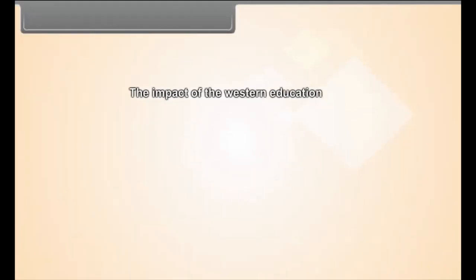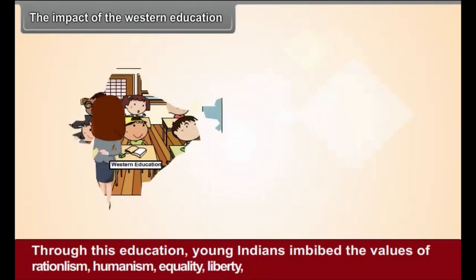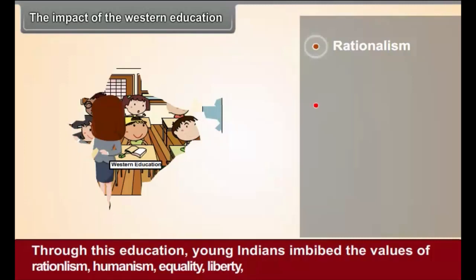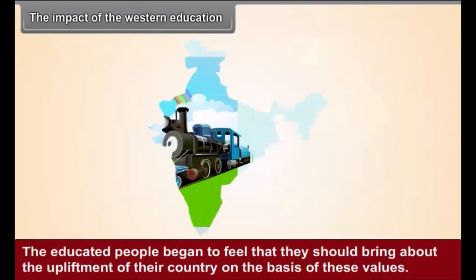The Impact of Western Education: The British introduced Western education in India. Through this education, young Indians imbibed the values of rationalism, humanism, equality, liberty, a scientific outlook, democracy and nationalism. The educated people began to feel that they should bring about the upliftment of their country on the basis of these values. Thus, Western education lent a modern outlook to the national sentiment of the Indians.